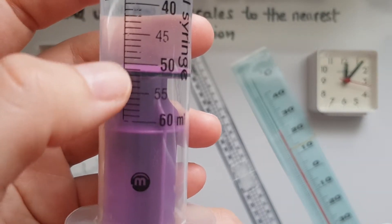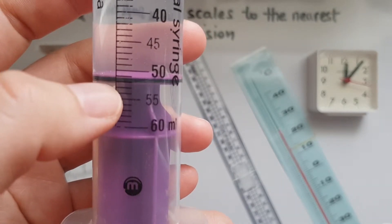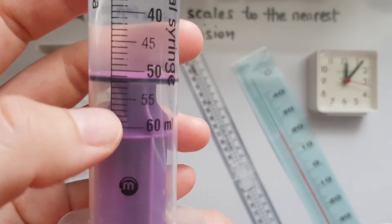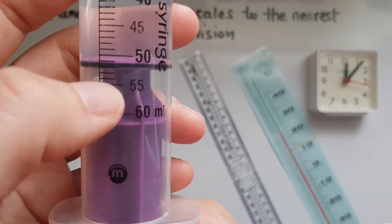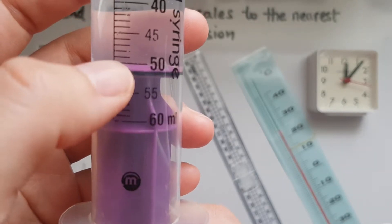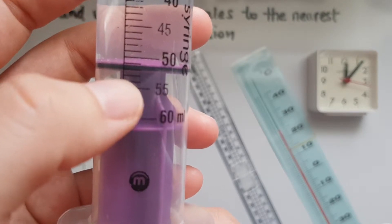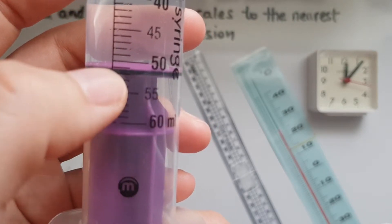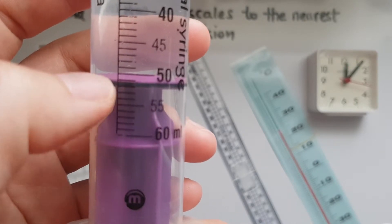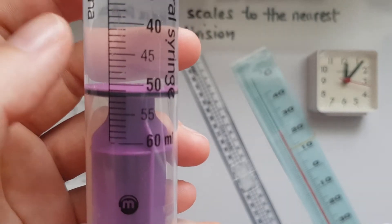So between 50 and 60, how many divisions do I have? 1, 2, 3, 4, 5, 6, 7, 8, 9, 10. And I've got a 55 here in the middle. So this must be 51, 52, 53, 54, 55. So this is closer to 51. So that is 51 ml.